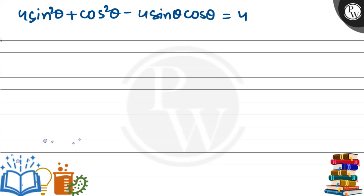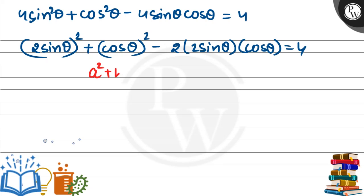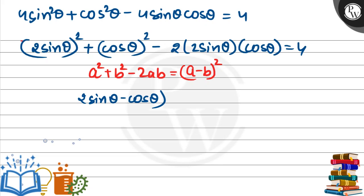Looking at this result, we can recognize the property a² + b² - 2ab = (a - b)². So we can write (2sin θ - cos θ)² = 4, which means 2sin θ - cos θ = 2. Hence proved.